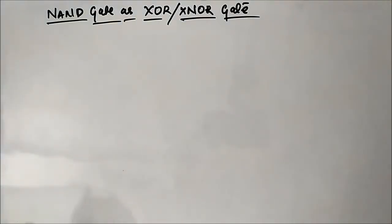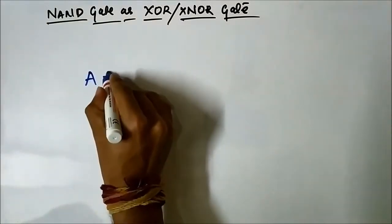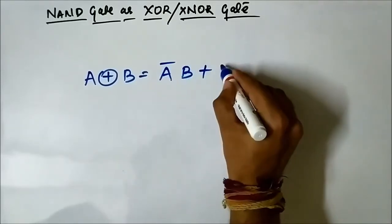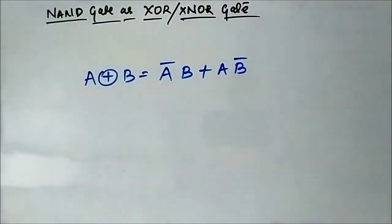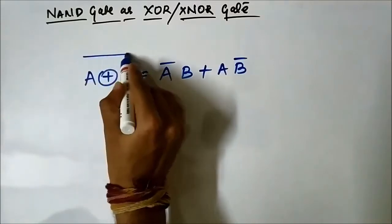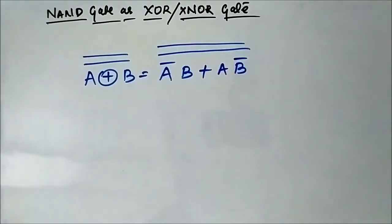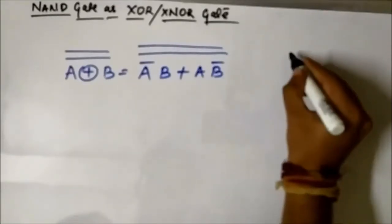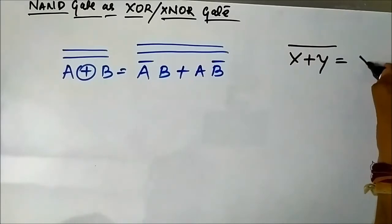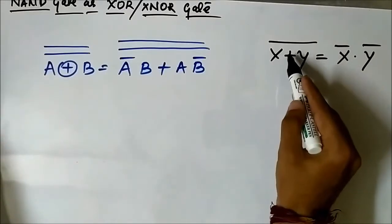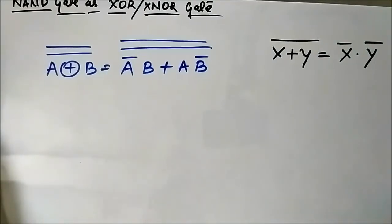The XOR output expression is given as A̅B or AB̅. If we double complement this whole expression — we are taking the complement of this expression twice — here you would remember De Morgan's theorem about OR expression. It says that if we take the whole complement of an OR expression, we will get the individual complements ANDed together. So this will be used here.